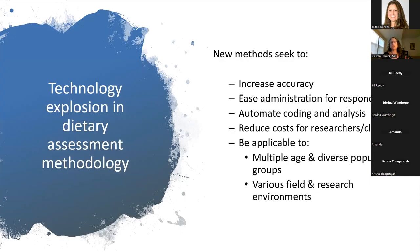I want to talk about the technological explosion that's occurred. When you think about the tools we have now versus what we had about 10, 15, 20 years ago, it's amazing. These new methods have really come up to increase accuracy and make it a lot easier for respondents to complete these tools. Most importantly, automating the process of coding 24-hour recalls — to pair what's reported as food and drink into the nutrients and food groups — that's an incredible innovation. It also leads to reduction in cost for both researchers and clinicians. These new tools we want to be able to use widely through multiple ages across diverse populations and to address lots of different research questions.